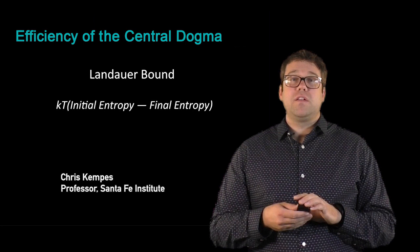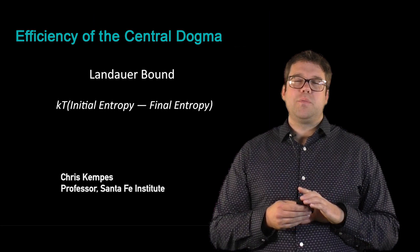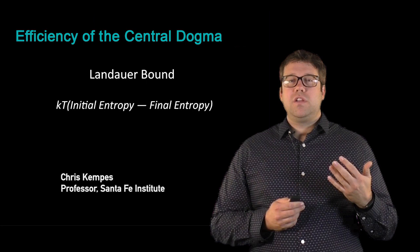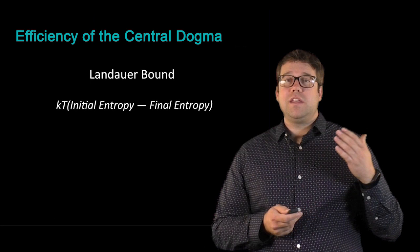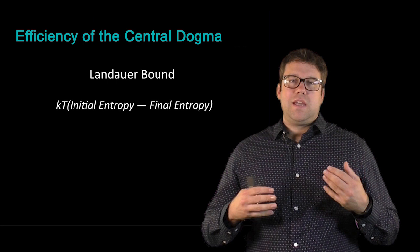We've talked in a previous lecture about how conserved the ribosome was, and how it may have evolved through deep time to become this more and more complicated structure. But a more physical question we could ask about the ribosome is how efficient or good is it at what it does? One perspective on that is this idea of Landauer's Bound.